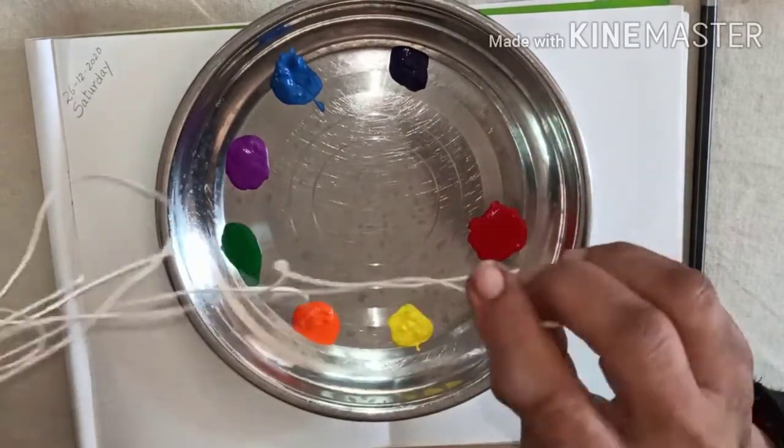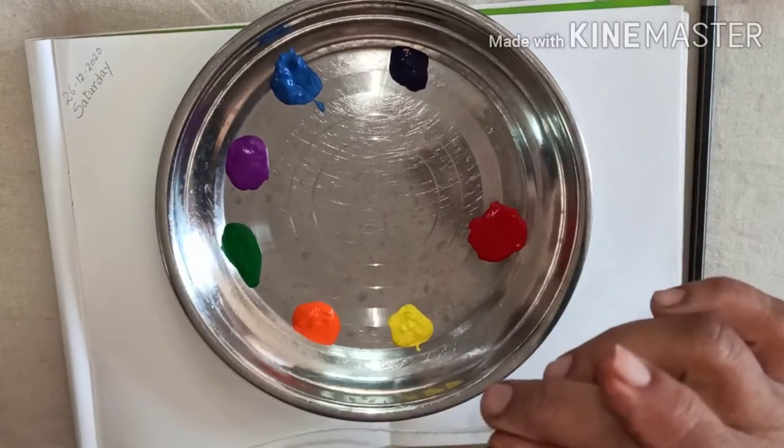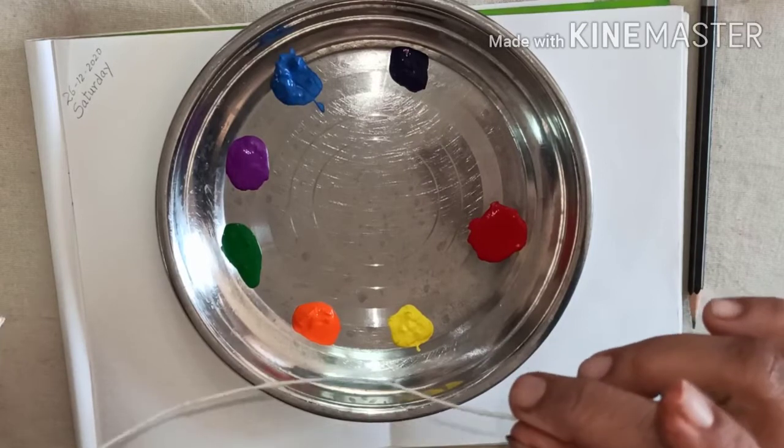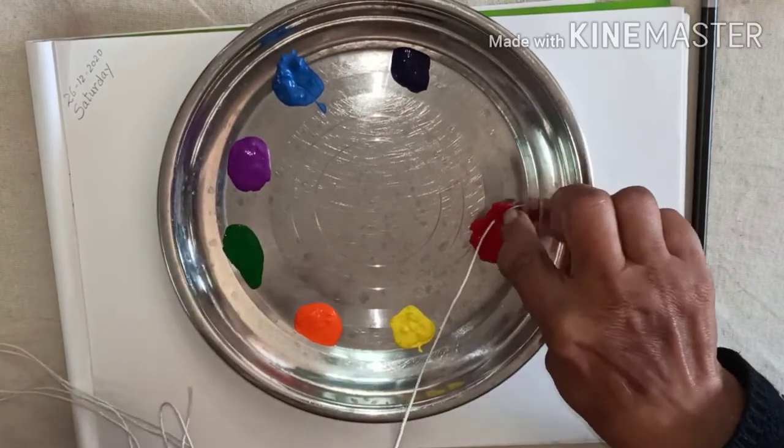So the thread, one side of the thread, एक side जो है, उसको colors में dip करने है. तो मैं आपको बतारी हूँ किस तरह से dip करने है. Okay? See, red color it is, so dip here, this way.